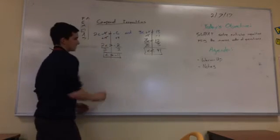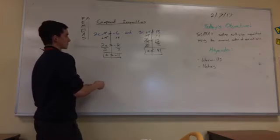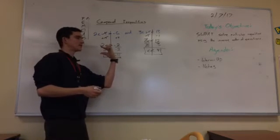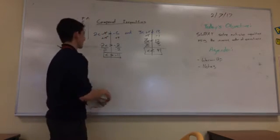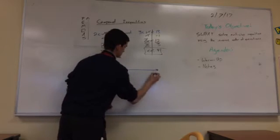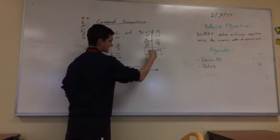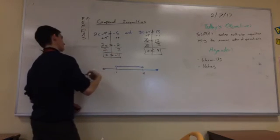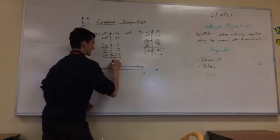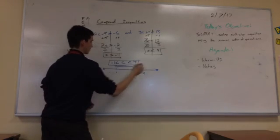Before graphing, one more thing: if you ever end up dividing or multiplying by a negative number, you must change the direction of your sign. For example, if there was a negative 2 and we divided by a negative 2, the sign facing this way needs to turn and face the other way. So graphing: negative 1 and 4 on the number line. c is greater than negative 1, and c is less than 4. It's graphed as one inequality, so these can be written together as: negative 1 is less than c, which is less than 4.